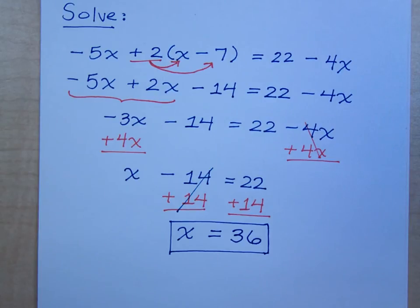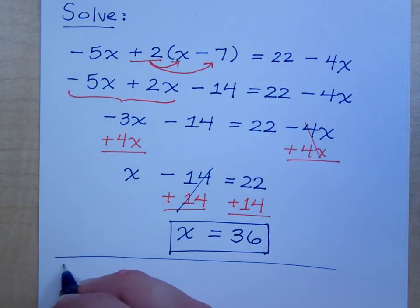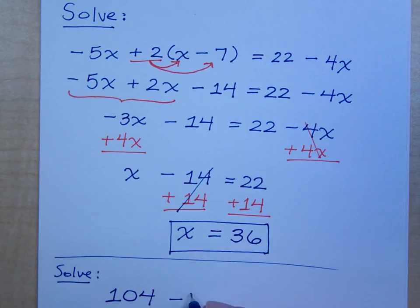Alright, so let's try this one. 104 minus 4x is equal to 5x plus 41.